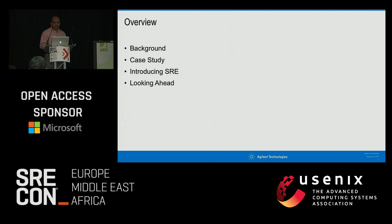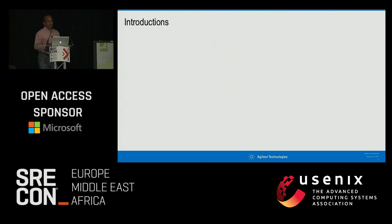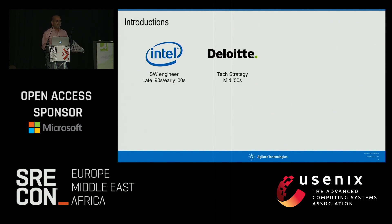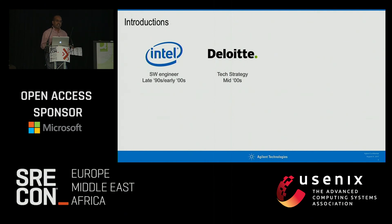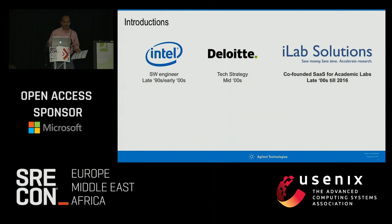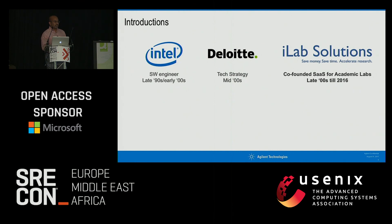A little about me: I spent the first part of my career at Intel doing software and hardware, then decided to stay with software. Eventually I didn't want to do programming anymore, so I went to Deloitte doing technology strategy consulting — a lot of M&A, pharmaceutical work. Then I realized I wanted to build product, so we started a SaaS company in Boston serving academic research labs.